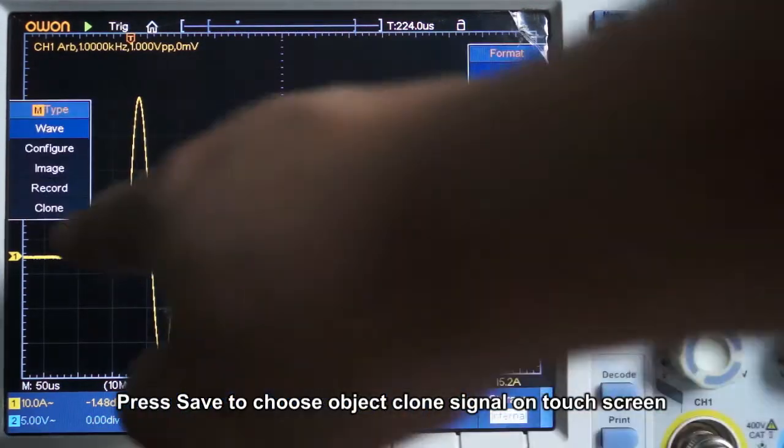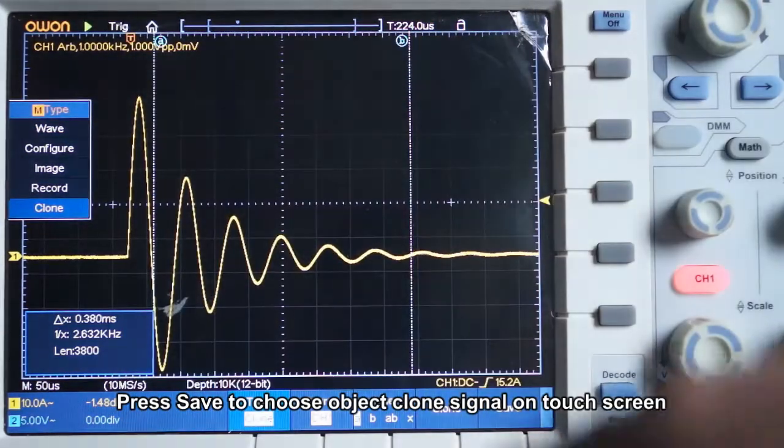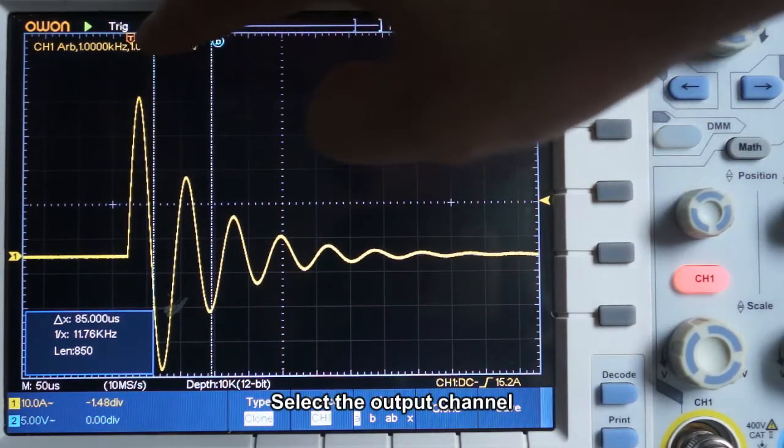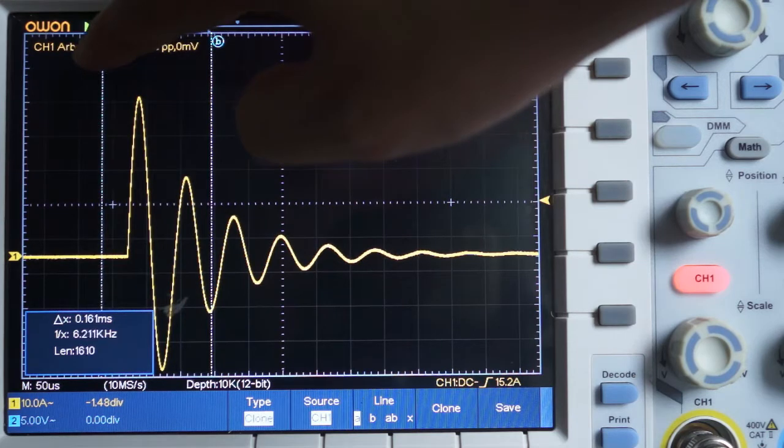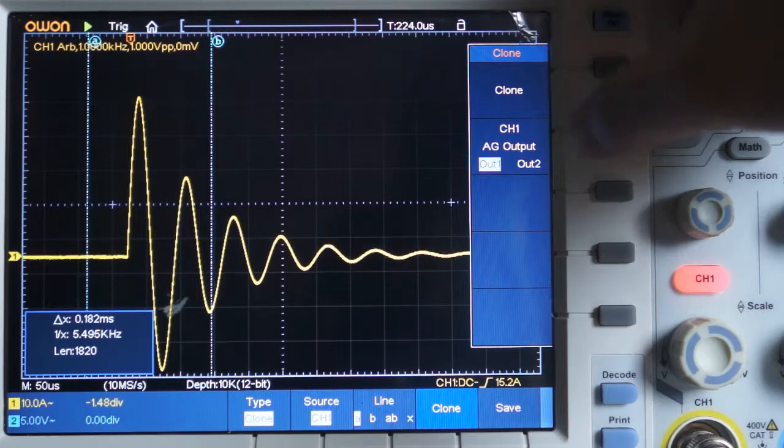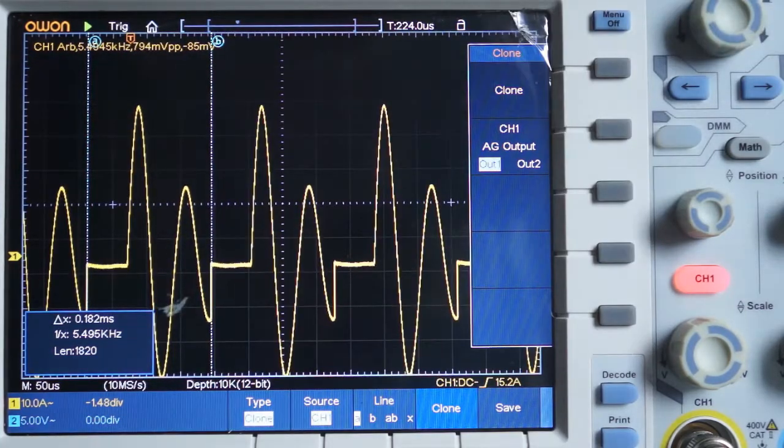Press Save button to choose the object clone signal on the touch screen. Select the output channel. Then, we can observe that waveform has been cloned to the relevant channel.